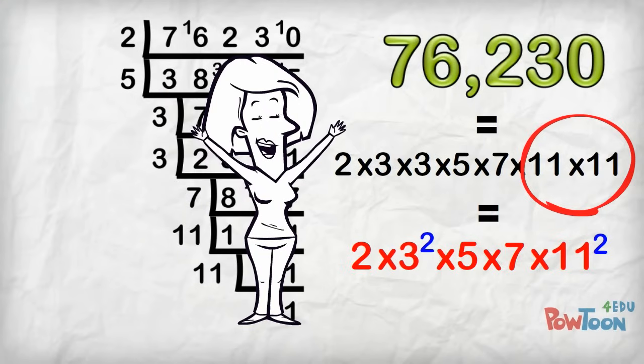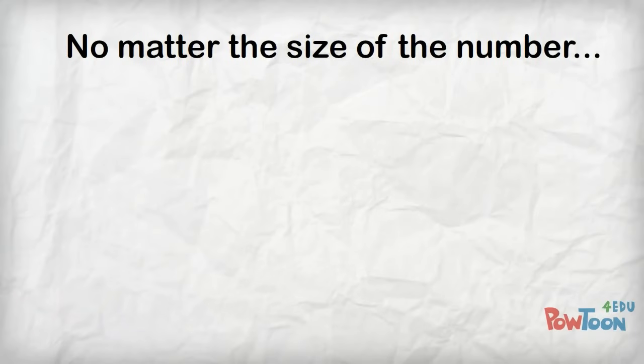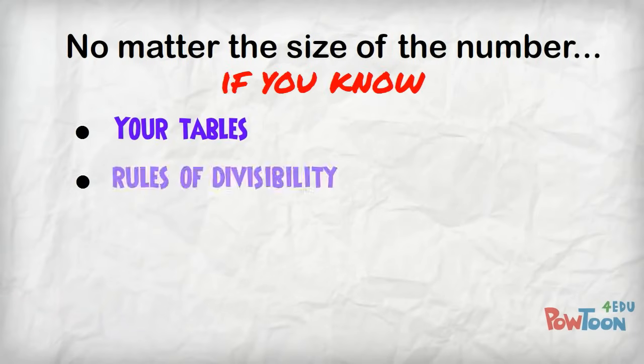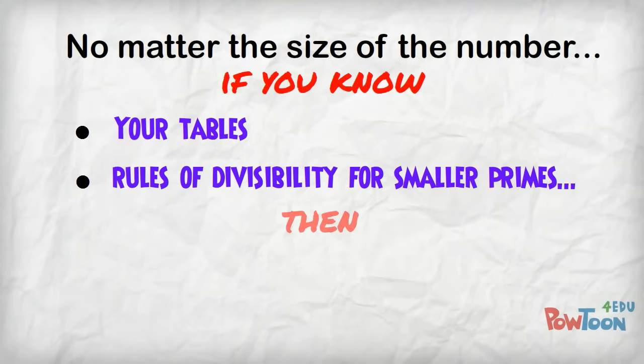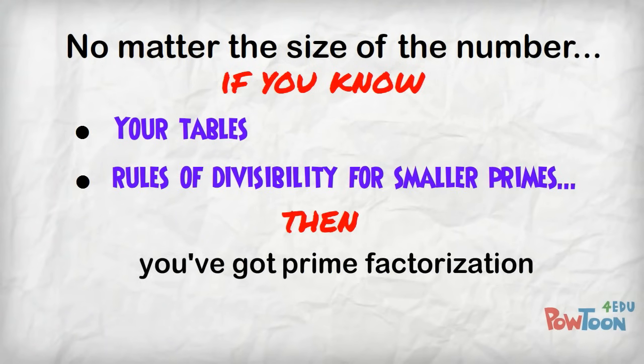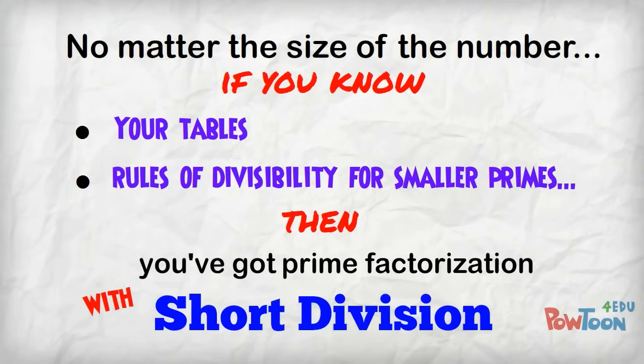And we're done! That's it. That's all there is to it. So you can see, no matter the size of the number, if you know your tables and the rules of divisibility for the smaller primes, then you've got prime factorization down fast with short division.